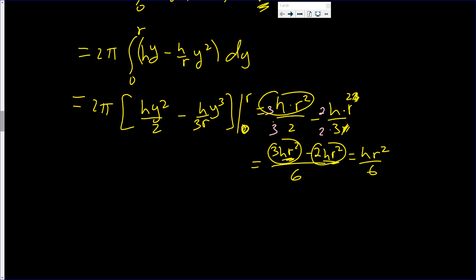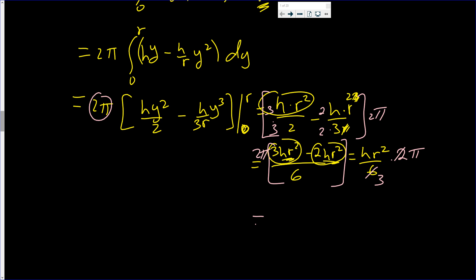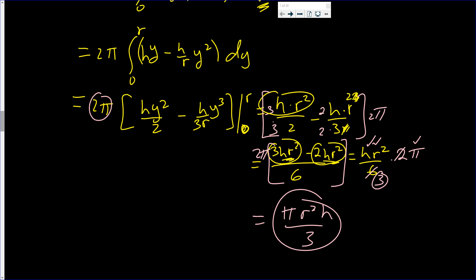Multiplying by 2π: 2π · hr²/6 = πr²h/3. That is the volume of a cone: πr²h/3. So we proved it twice — we're doubly sure the volume of a cone is (1/3)πr²h. We proved it using the shell method just now, and in the last video we proved it using the disk method. That completes this video on the shell method.